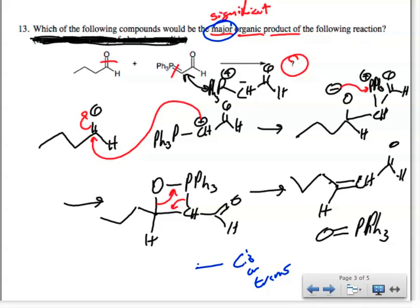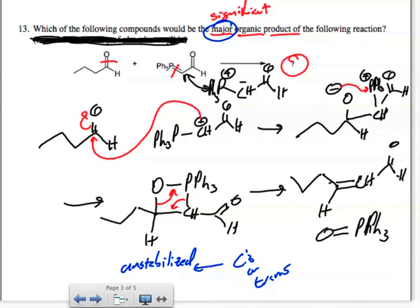For the cis and trans, if this is an unstabilized ylid, then I'd expect it to be cis. If it is a stabilized ylid, then I'd expect it to be trans.